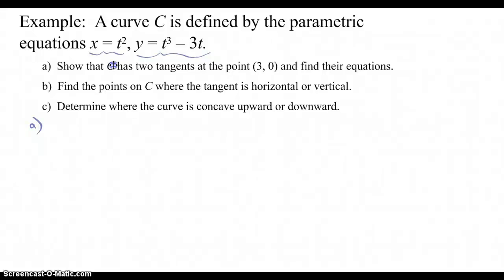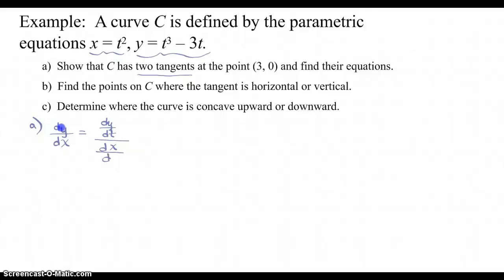Part A says: show that C has two tangents at the point (3, 0) and find their equations. If there are two tangents, there should be two t-values. So dy/dx = dy/dt ÷ dx/dt. Here dy/dt = 3t² − 3 and dx/dt = 2t.